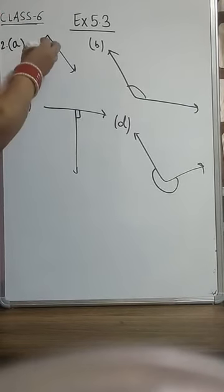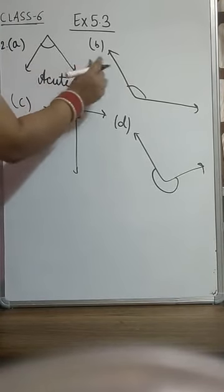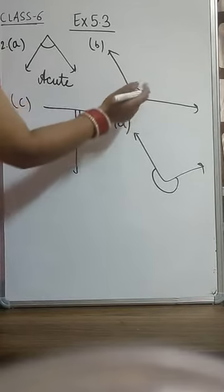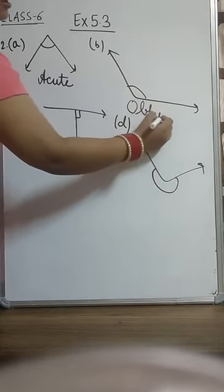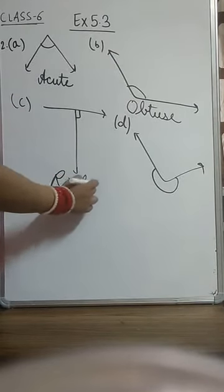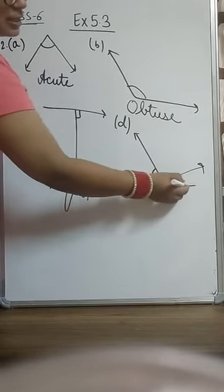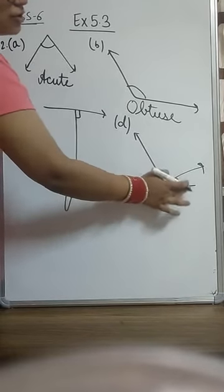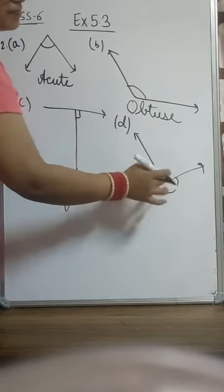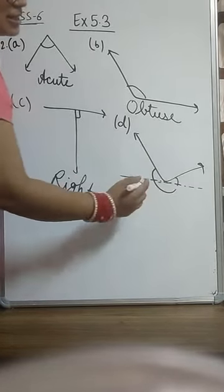In part D, you can see this is less than 90, so it is an acute angle. This one is greater than 90 but less than 180, so it is obtuse. You can see this is a perpendicular line, so it is a right angle. And here you can see this is somewhat like a straight line — it is exceeding 180 degrees, so it is a reflex angle.